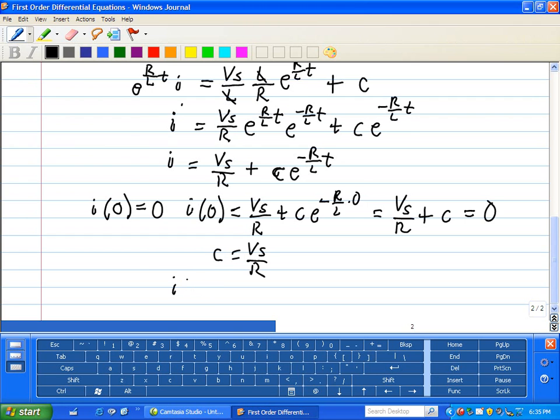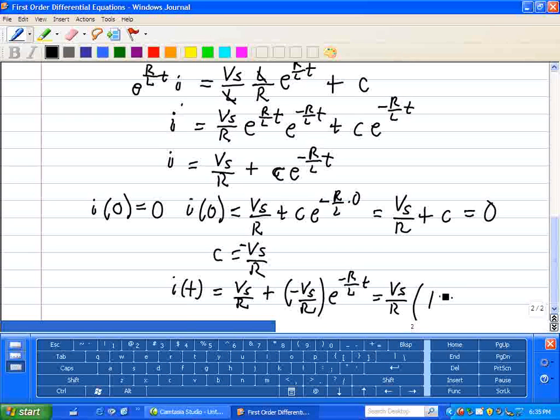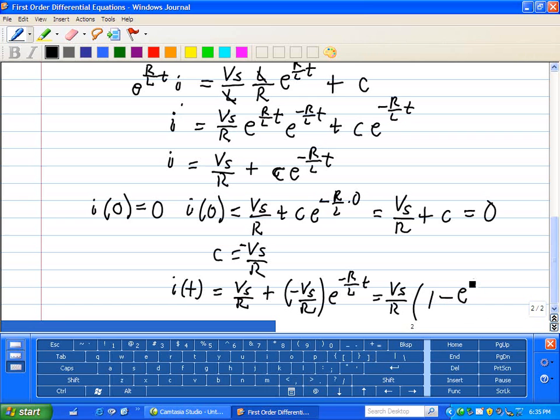Hence, our solution to this equation, i as a function of time, is Vs over R. Our constant c is Vs over R also, but it's with a negative. So that's negative Vs over R, e to the minus R/L times t. We can simplify this by factoring out the Vs over R. That leaves one minus e to the minus R/L times t.